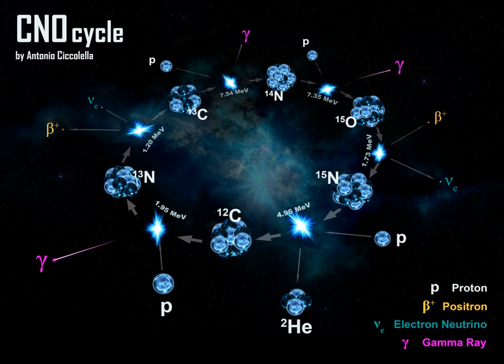The proton-proton chain is more prominent in stars the mass of the Sun or less. This difference stems from temperature dependency differences between the two reactions. P-P chain reaction starts at temperatures around 4 times 10 to the 6 K, making it the dominant energy source in smaller stars.